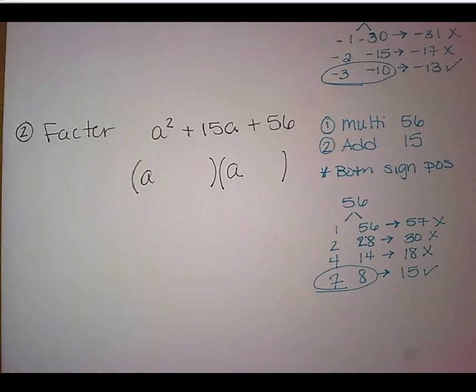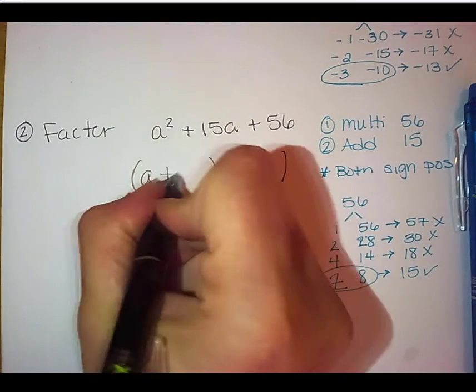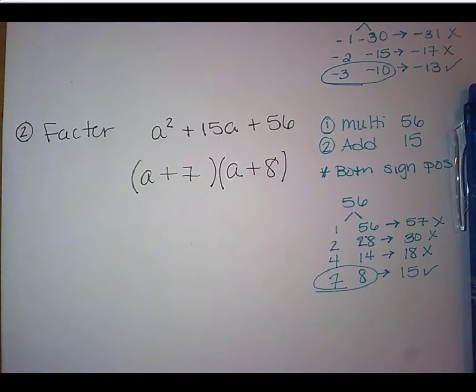By the way, guys, if you're unsure if something divides into 56, take your calculator out and divide it. If you don't know whether or not 3 divides into 56, check it and make sure if it does or doesn't. If it doesn't, then you can just ignore it and go on to the next number. Okay? So in here, we're going to have a plus 7 and a plus 8. So we get a plus 7 times a plus 8.